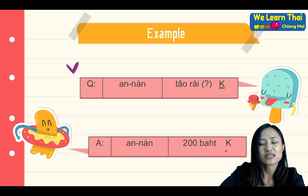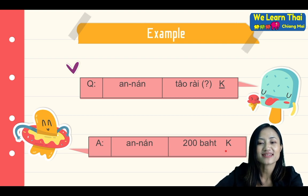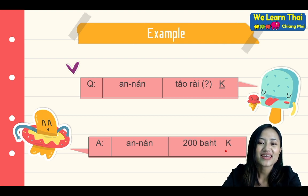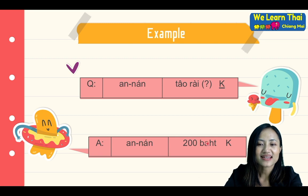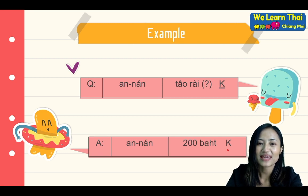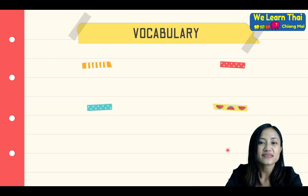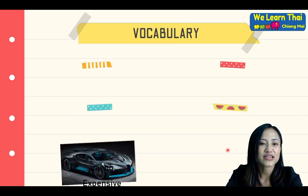That one is 20 baht. Try again: อันนั้นยีสิบบาดครับ. Okay, so now we will look at the vocabulary here.